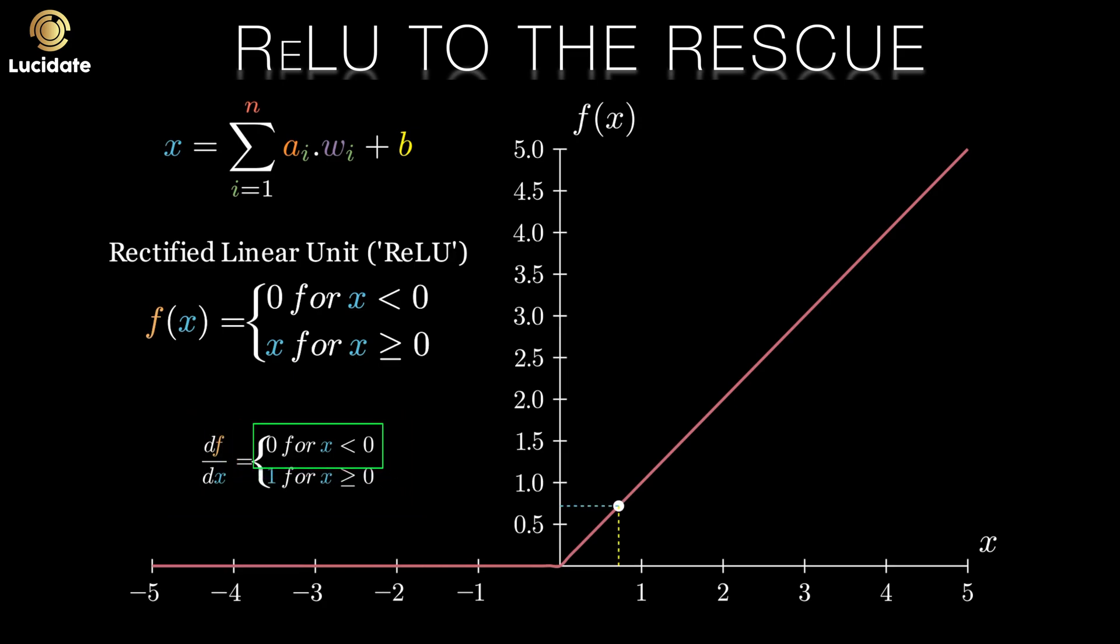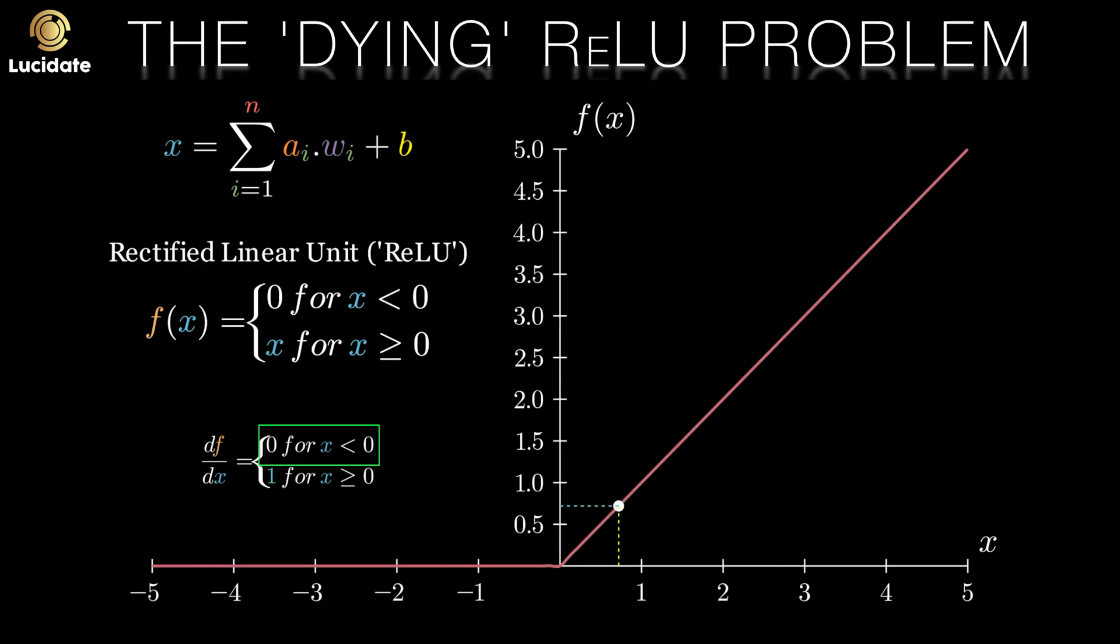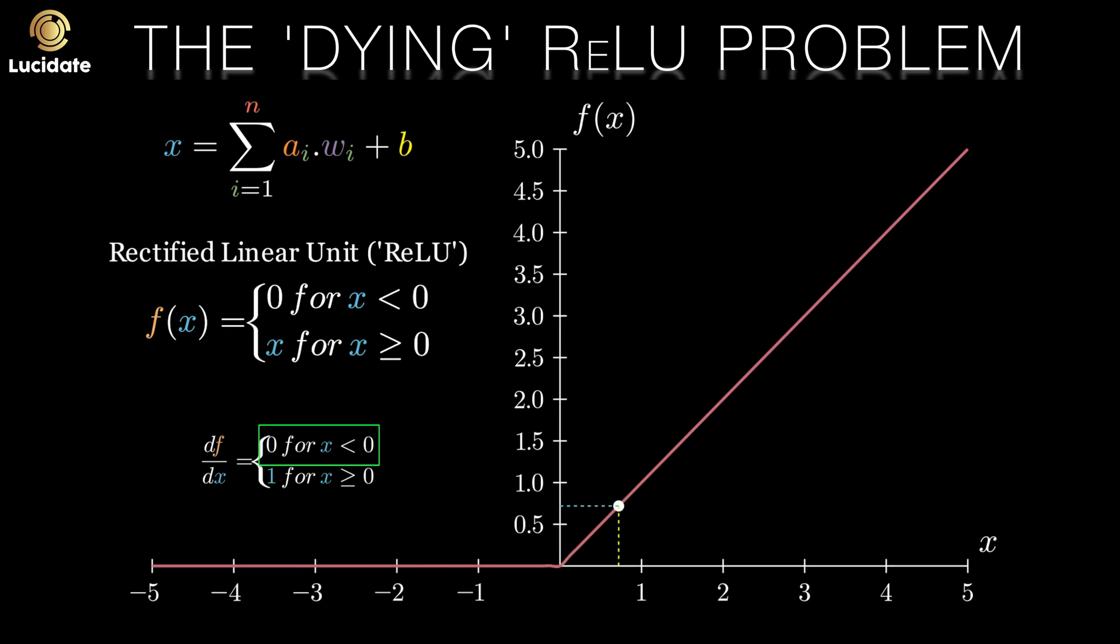Given that the gradient for negative inputs is zero, there's still a potential problem. You may hear the term dying RELUs or dead RELUs, where training and updating of the weights stalls. If this does become an issue, many people turn to some pragmatic solutions.